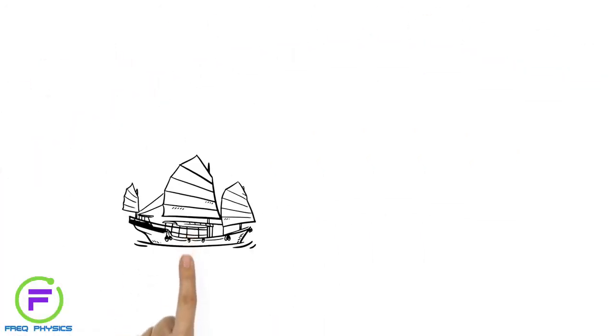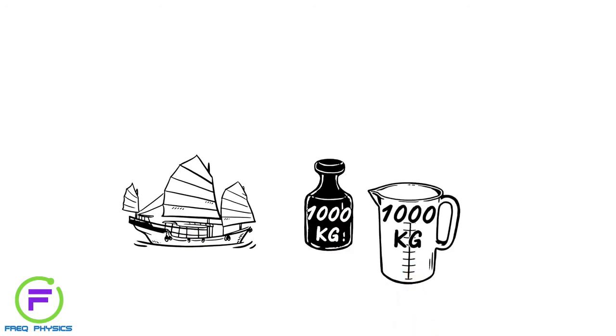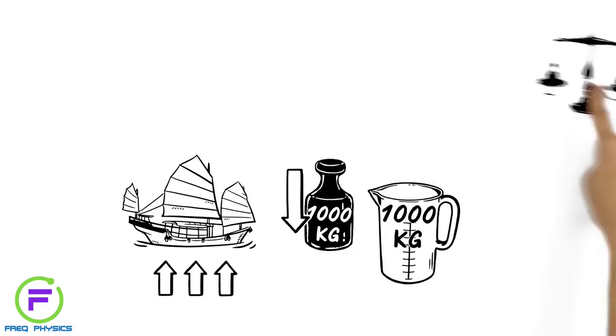So, if a boat weighs 1000 kg, it will sink until it displaces 1000 kg of water, or until its weight and upthrust are balanced.